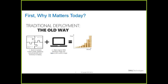Why does this matter today? We've been doing traditional deployment for many years — building images or using the OEM component. Traditionally, many organizations have been wiping the OEM image and deploying it, which means a lot of money and time spent maintaining, building, and updating that image. With Windows 10, that has been a really significant problem because Windows 10 gets updated at least every 18 months.